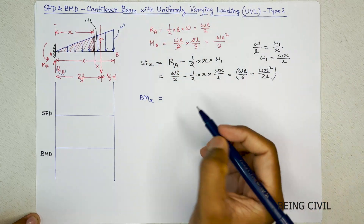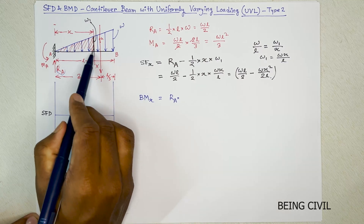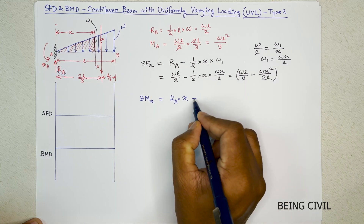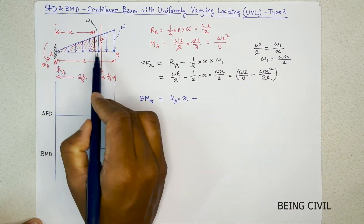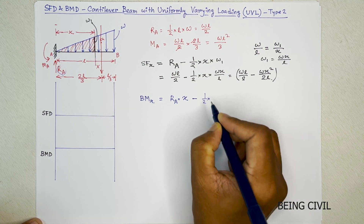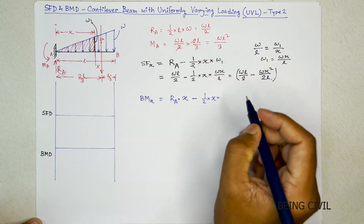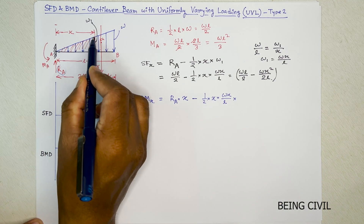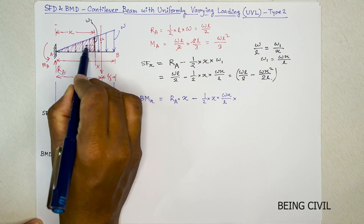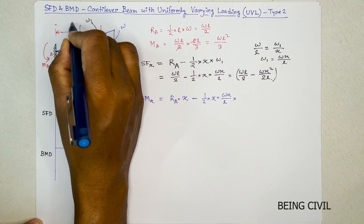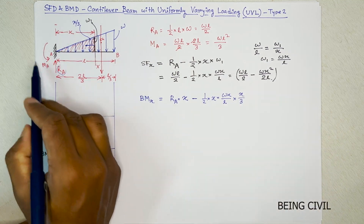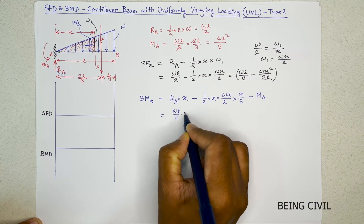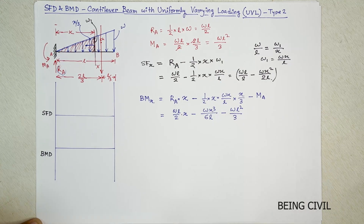For BMx, RA creates a moment over perpendicular distance x. The moment due to the triangular load area is negative, so it is subtracted. The total load of the small triangle is half times x times w1 = wx/l, and its CG distance from the section is x/3. The reaction moment MA is also negative. Simplifying gives the bending moment equation.